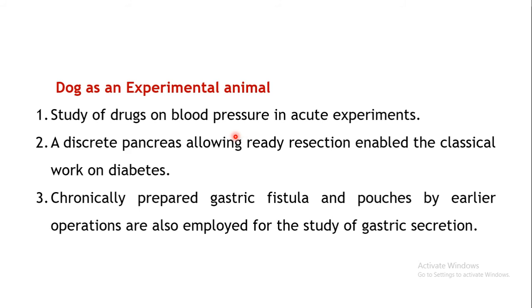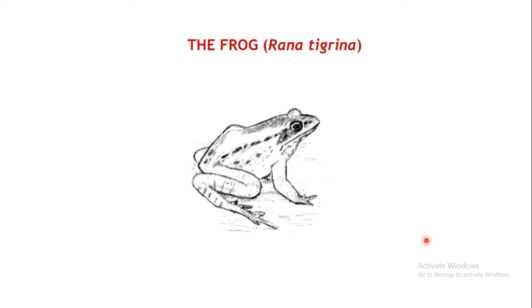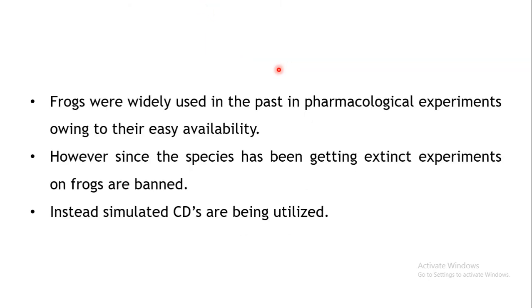Dogs are commonly used to study the effects of drugs on blood pressure. They have a discrete pancreas, making them useful for studying diabetes and the effects of drugs on diabetes. Chronically prepared gastric fistulas and pouches are utilized for study of gastric secretion.